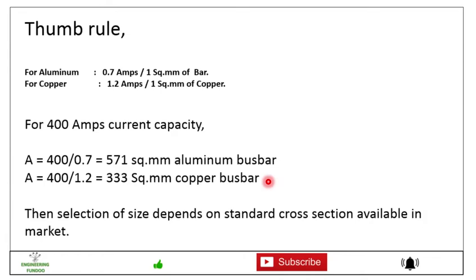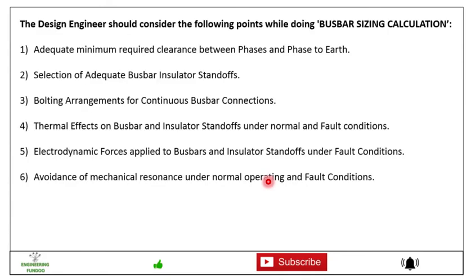But there are other design factors which are also considered for designing the busbar. And a few of the factors are: adequate minimum required clearance between the faces and the face to the earth, then second is selection of adequate busbar insulator standoffs. This is the insulator standoffs used to support the busbars.